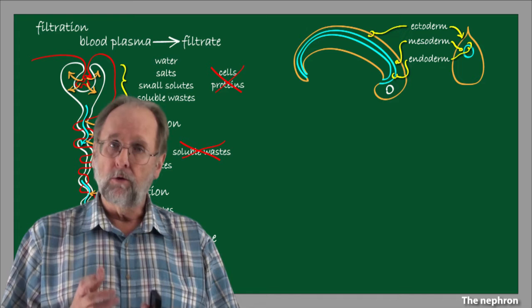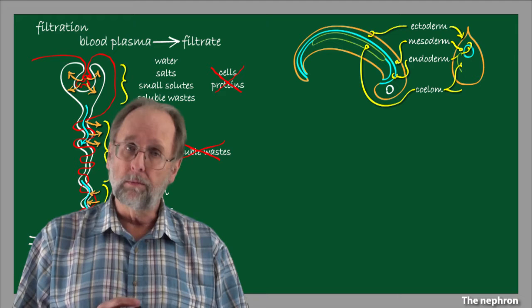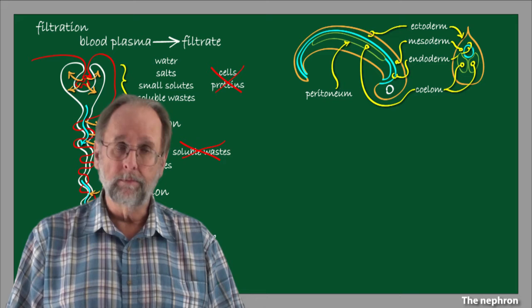Through embryonic development, an intermediate germinal layer, the mesoderm, forms to fill in the space between endoderm and ectoderm. Also, fairly early in development, a space opens up in the interior of the mesoderm to form the coelom, which is a word from the Greek for hollow or cavity. The coelom eventually becomes lined with an epithelial layer that becomes the peritoneum.